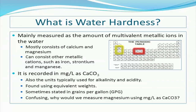Other species such as iron, strontium, and manganese behave similarly to calcium and magnesium, but are not as much of a concern at comparatively lower concentrations. These other trace metals are more easily removed using different methods than those employed for the treatment of calcium and magnesium hardness. Water hardness is typically reported in milligrams per liter as calcium carbonate, which is also how we measure alkalinity and acidity.